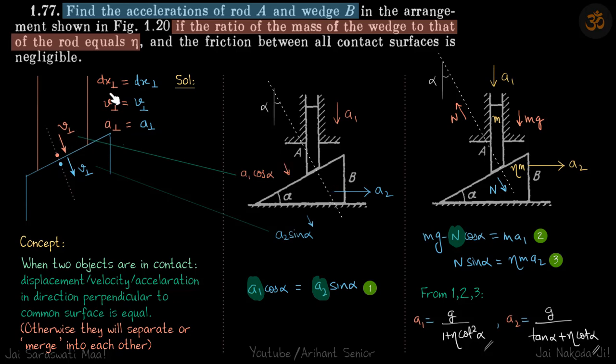So why velocities must be same? If you do dx perpendicular by dt you get v perpendicular equals v perpendicular for both the bodies. You differentiate it again and we get a perpendicular equals a perpendicular. So that's what we are going to use on the direction perpendicular to the common surface. We are going to write the accelerations to be equal in this direction.